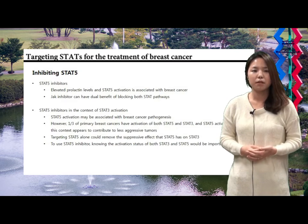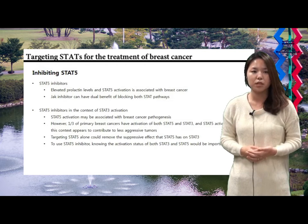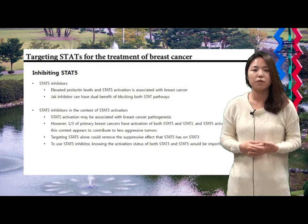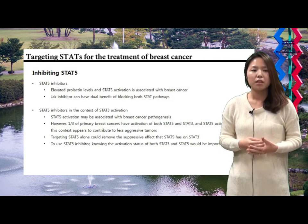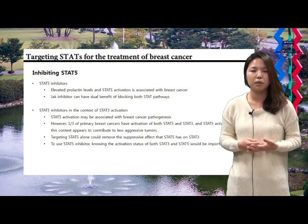Inhibition of STAT 5 is similar to STAT 3; using a JAK inhibitor can have the dual benefit of blocking both STAT pathways. However, as mentioned previously, STAT 5 has a suppressive effect on STAT 3's oncogenic functions when they both exist together, so targeting STAT 5 alone could remove the suppressive effect that STAT 5 has on STAT 3. Therefore, to use a STAT 5 inhibitor, knowing the activation status of both STAT 5 and STAT 3 would be important.